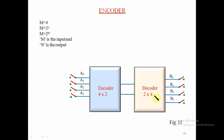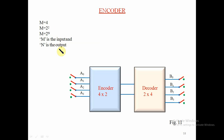This 2-to-4 configuration means we get 4 output lines — it is cascading the encoder with a decoder. Here, M equals 4 input lines, and M equals 2 to the power 2, giving us 4. The value of n (2) is the number of output lines of the encoder. M is the input and n is the output.